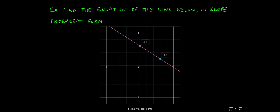Let's say we're asked to find the equation of the line in slope-intercept form from a graph. We start by looking at this line, and it passes through the points (0,3) and (3,1).